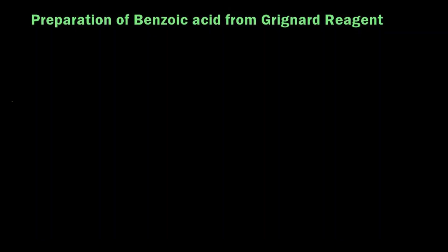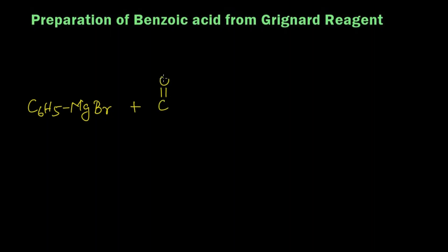In this video we are going to learn the preparation of benzoic acid from Grignard reagent. Let's take phenyl magnesium bromide, C6H5MgBr. We are going to react it with solid carbon dioxide — that is dry ice, C=O — in the presence of dry ether.